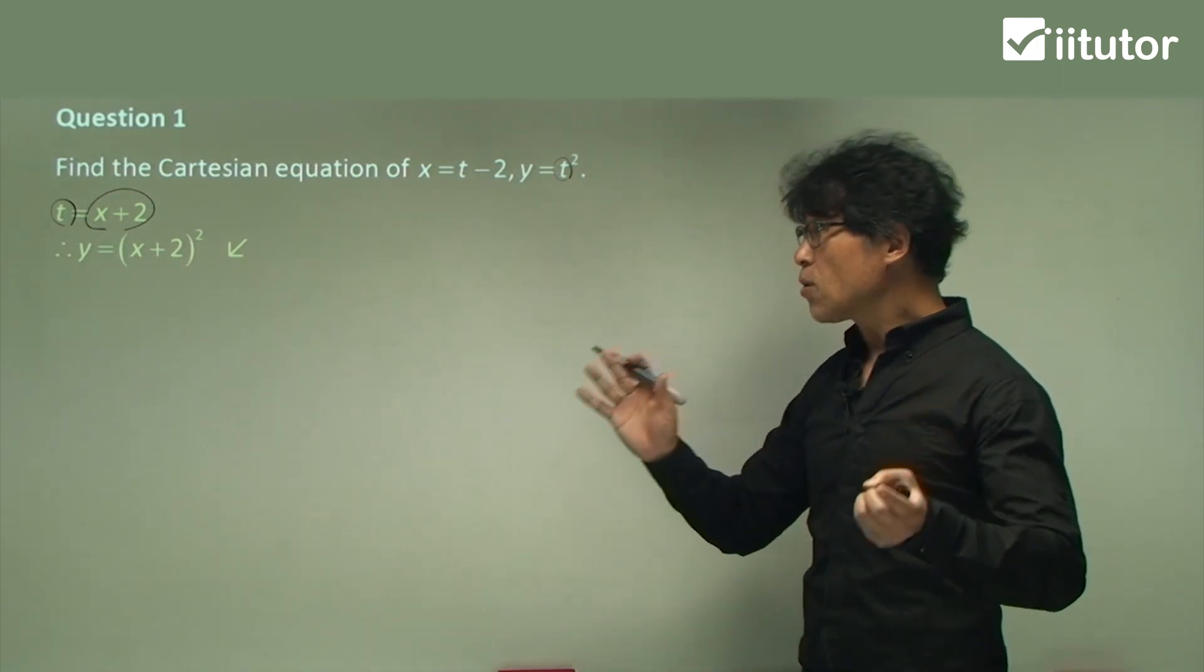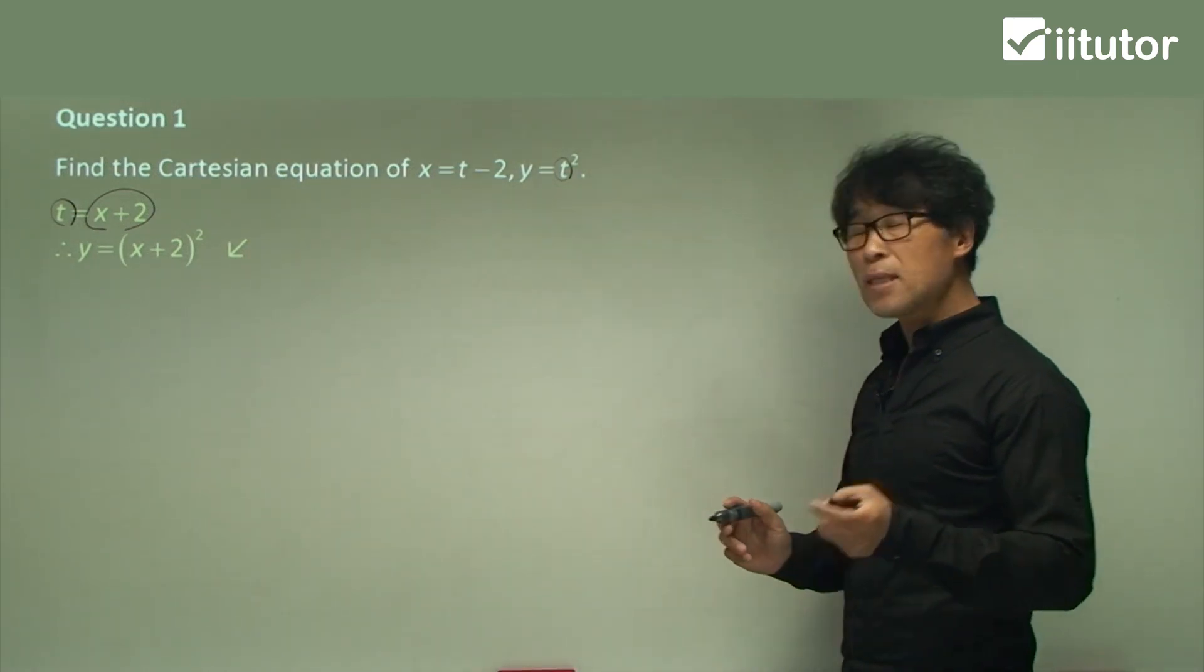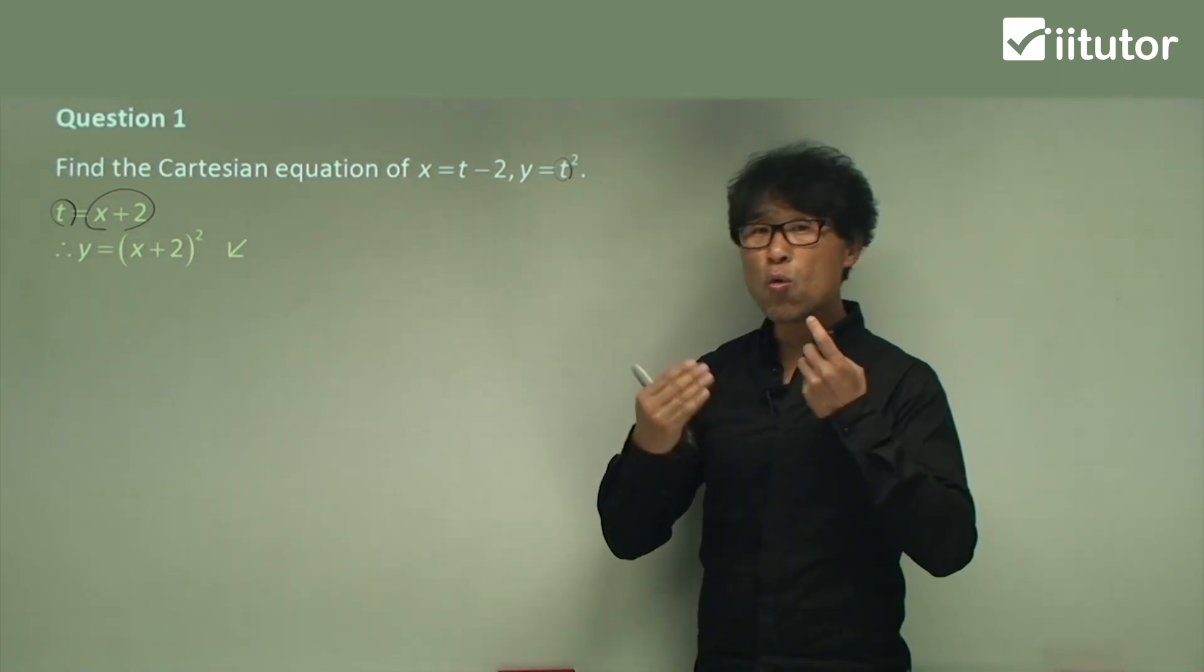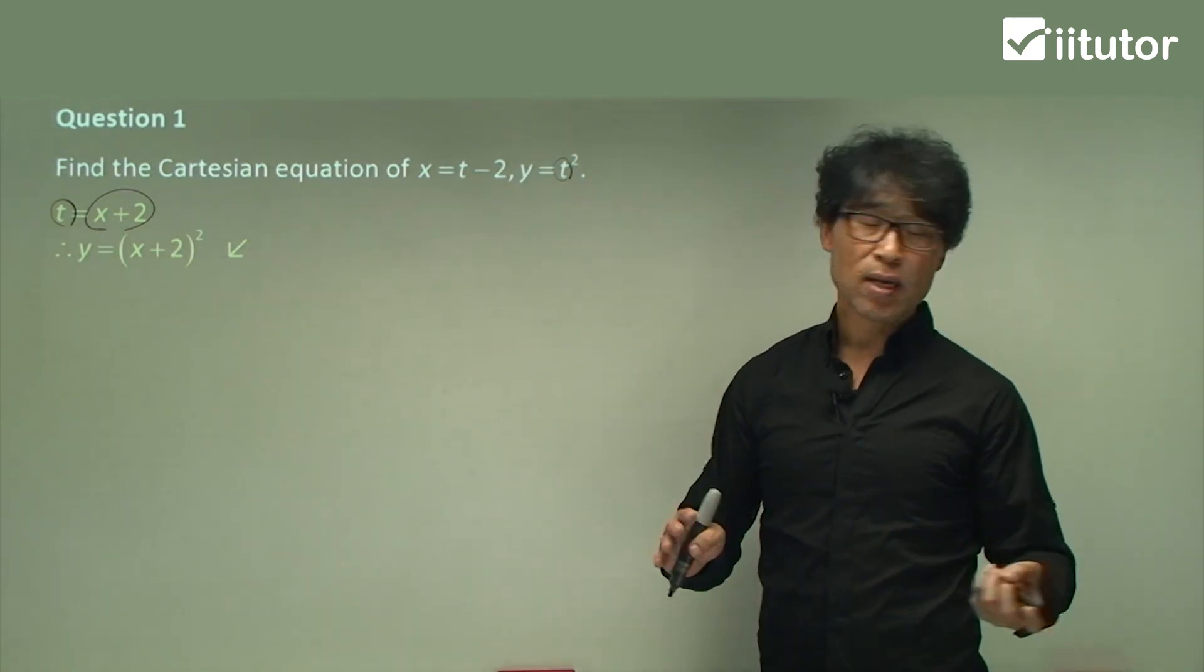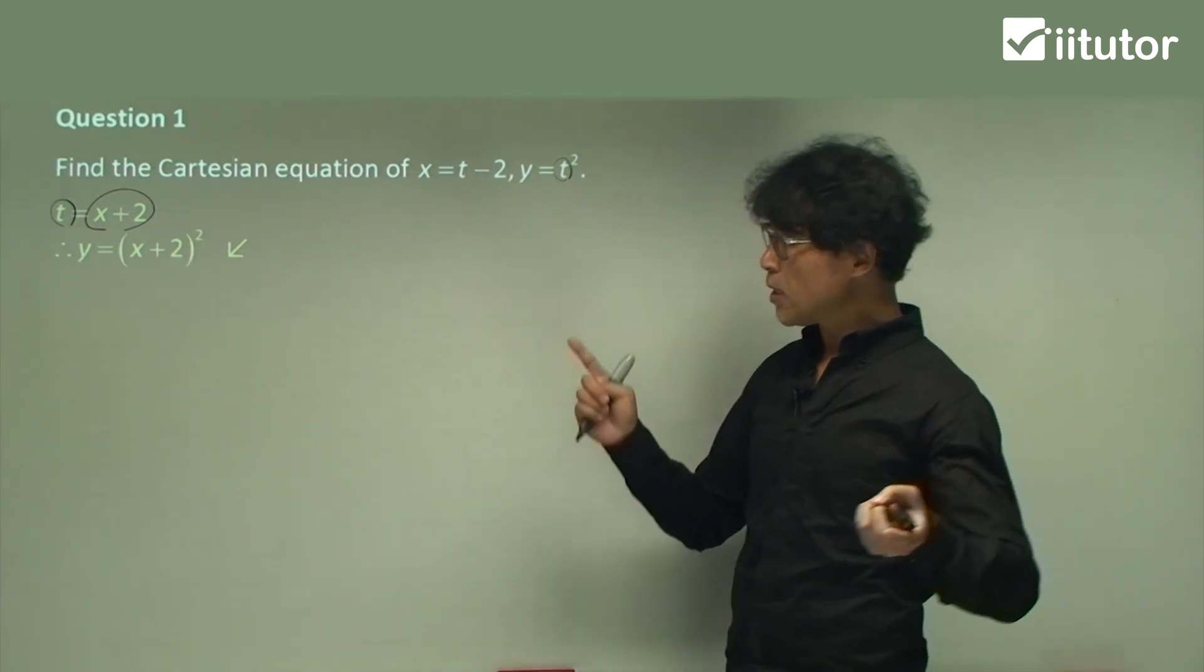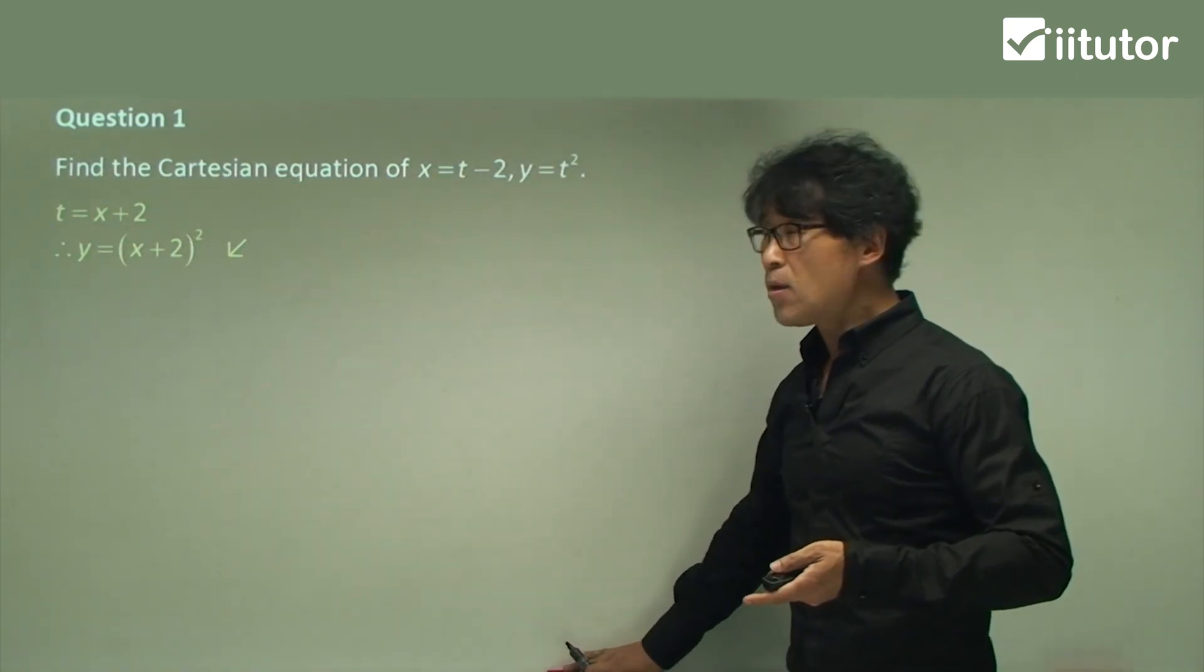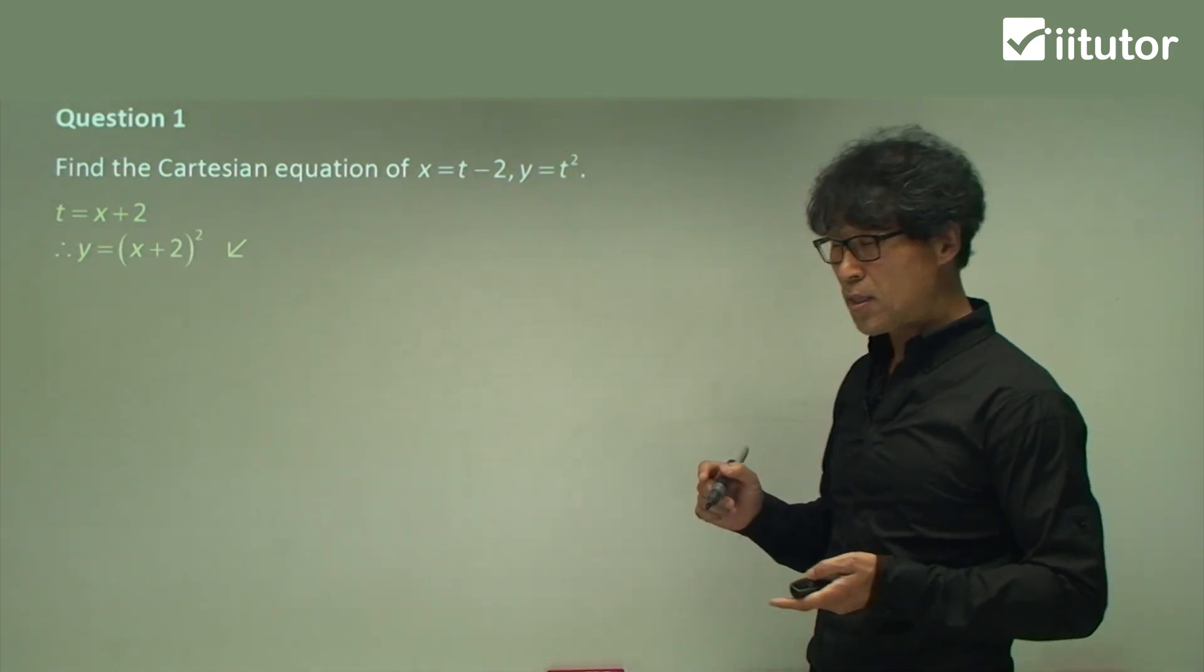So as long as, well, you don't have to expand this one. You may want to expand. That's not a trouble, but that's not the point of this topic. As long as t disappears or any parameter, well, the parameter may not be always t, maybe theta, maybe alpha, whatever. As long as they are not the two main pronumerals, then that's parameter. So I show you the first examples, how to eliminate the parameter and make the Cartesian equation from it. Let's jump on to the next one.